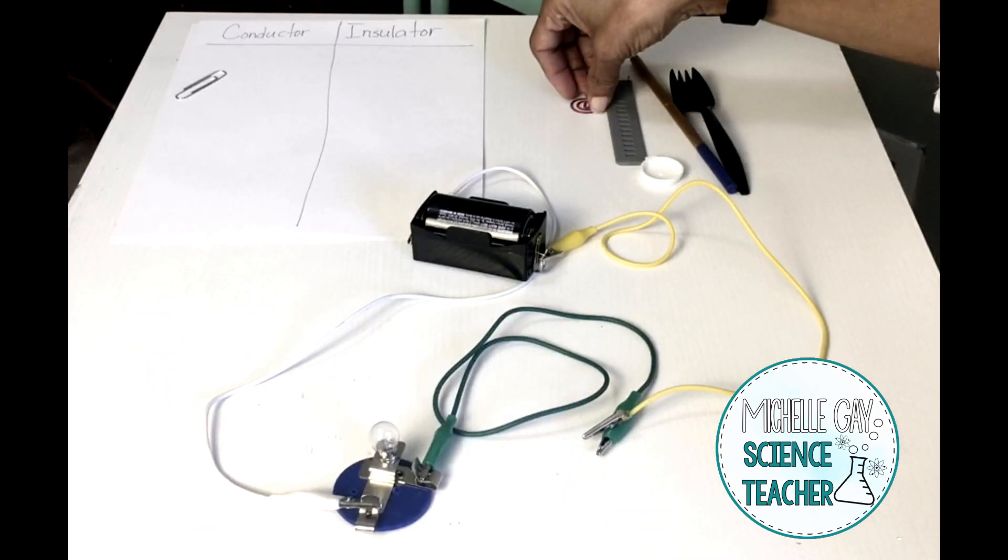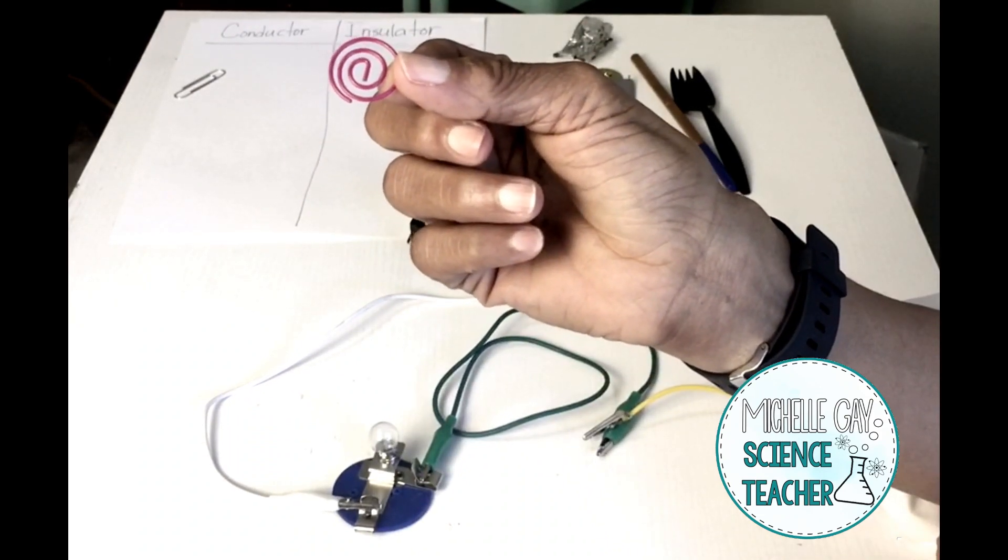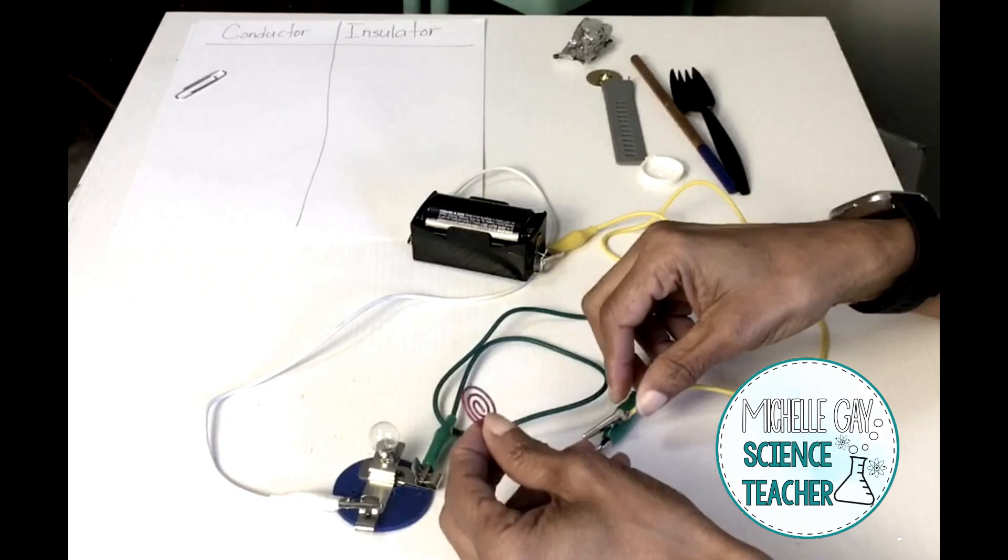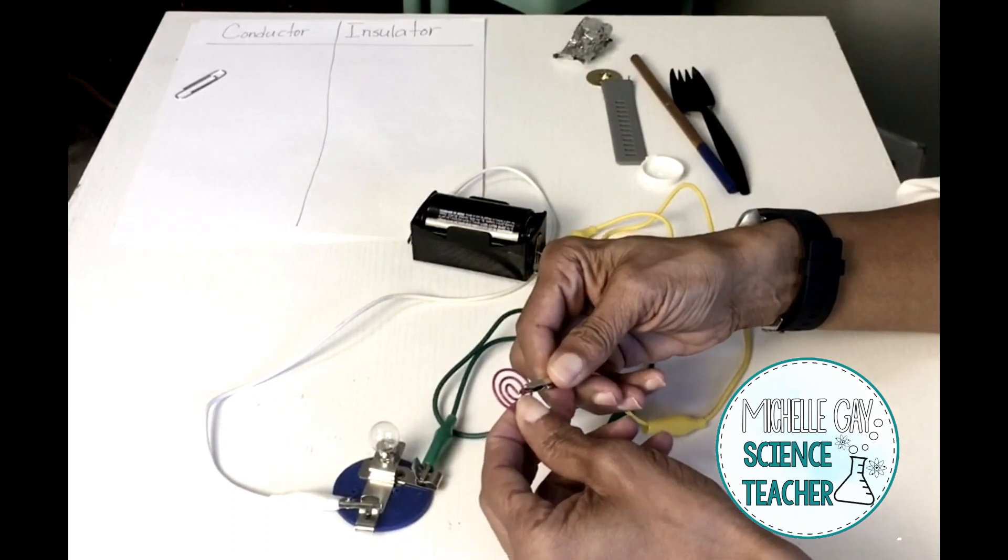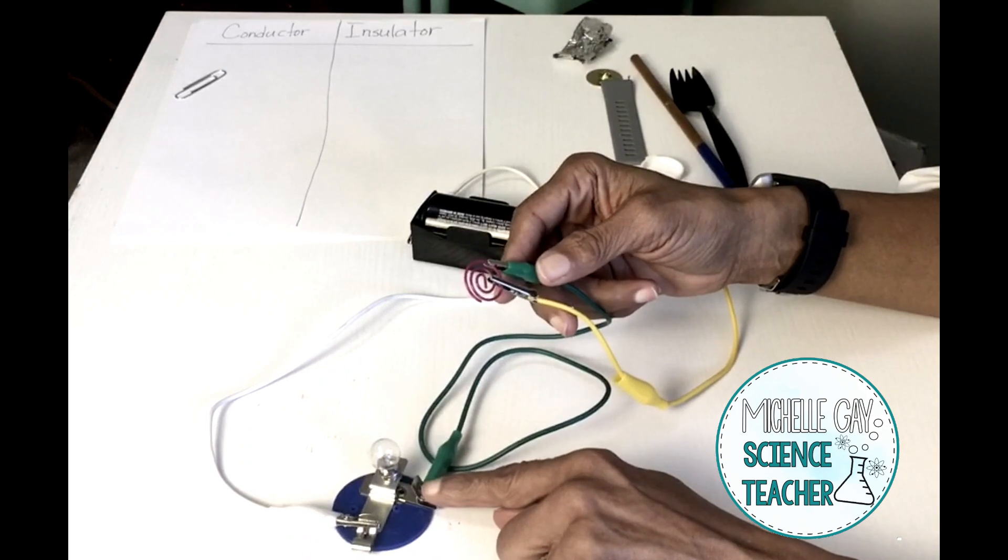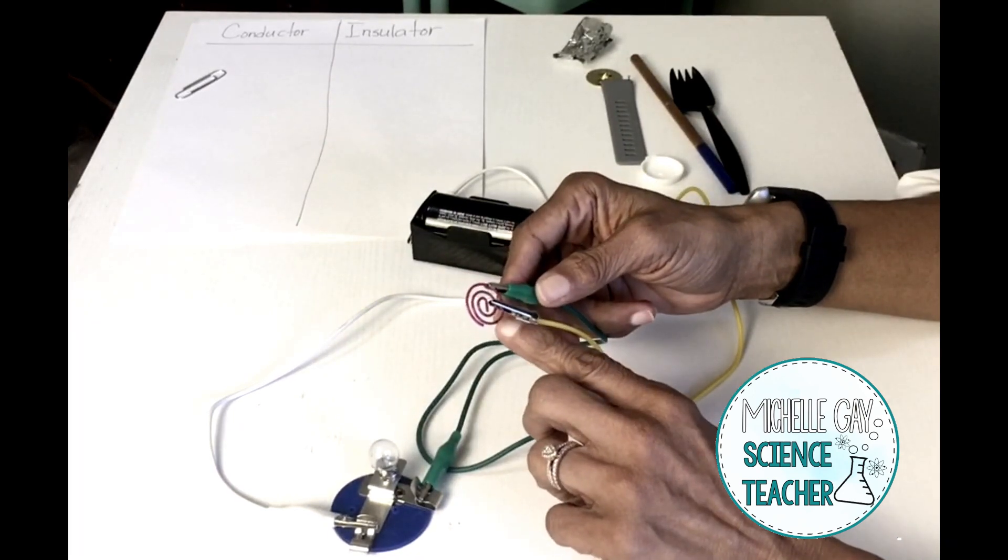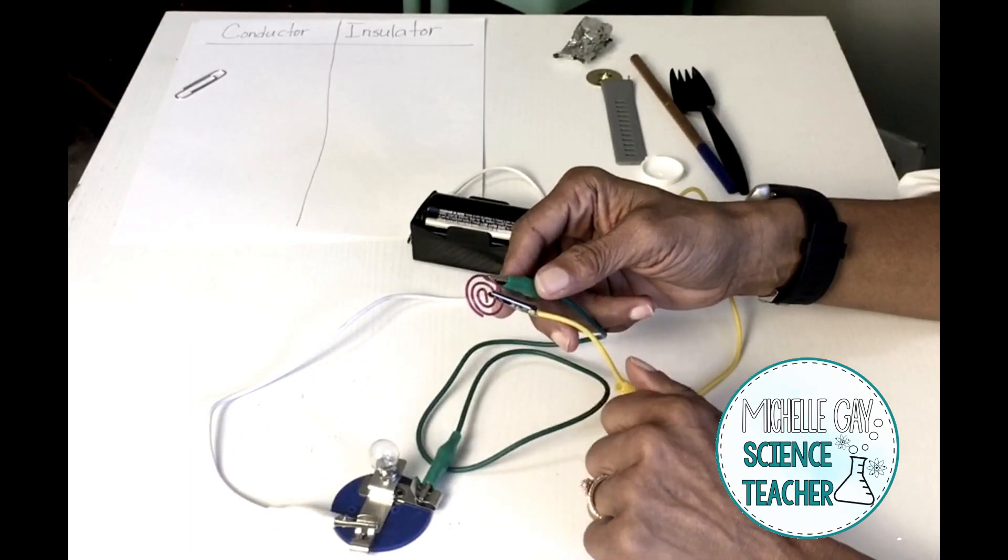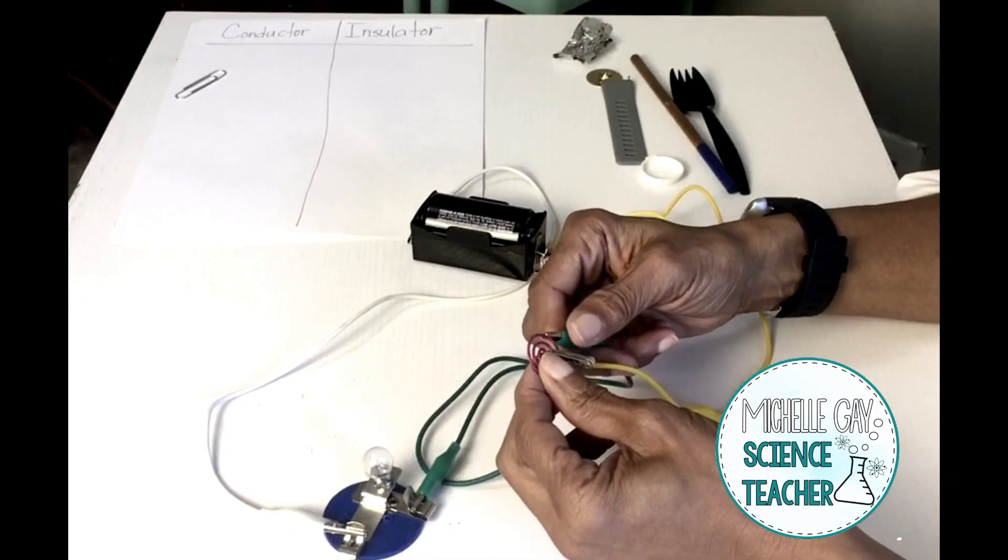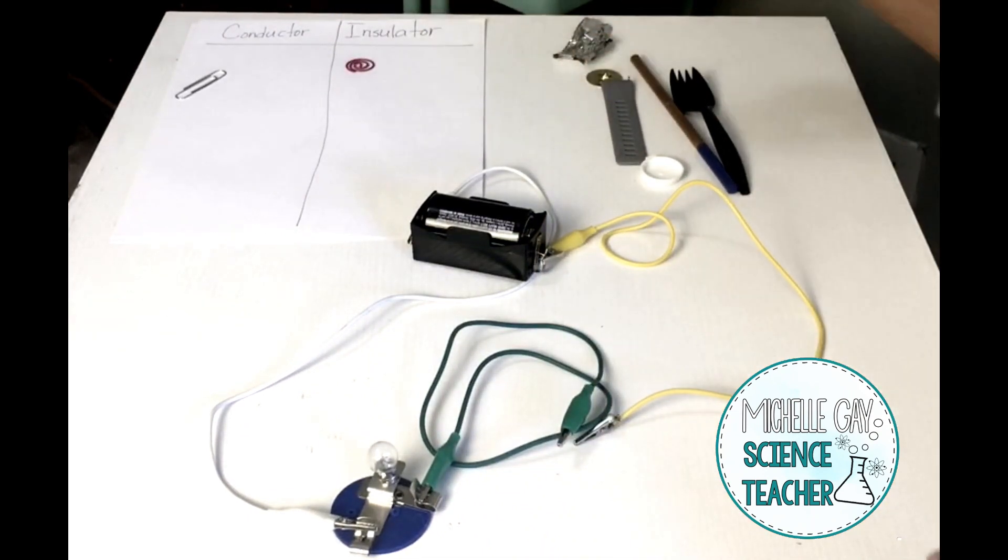Now let's test out this next paper clip. What do you think? Look at this paper clip closely. Do you think this paper clip is going to be a conductor also? Let's test out and see. This paper clip is an insulator because this paper clip has a plastic coating on the outside. Even though on the inside there is wire, on the outside we have a plastic coating. Why is plastic coating important on wires? Think about that. We're going to put that under insulator.